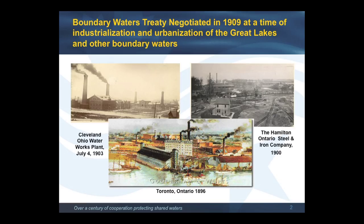The Boundary Waters Treaty was negotiated in 1909. It was primarily a time of industrialization of the Great Lakes and other boundary waters, and the U.S.-Canada Boundary Waters Treaty established the International Joint Commission.